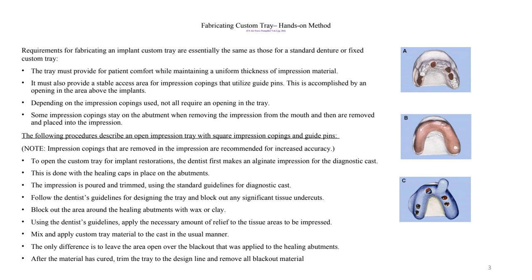Custom trays fit better over the patient's mouth and are more accurate in terms of registering the implant location and position. Requirements for fabricating an implant custom tray are the same as those standard for dentures or fixed custom trays. The tray must provide patient comfort while maintaining a uniform thickness of impression material. We have to apply a thin layer of wax over natural teeth to provide enough room for the impression material.